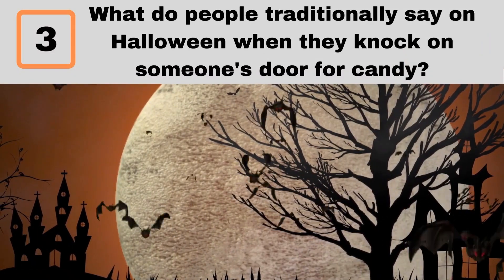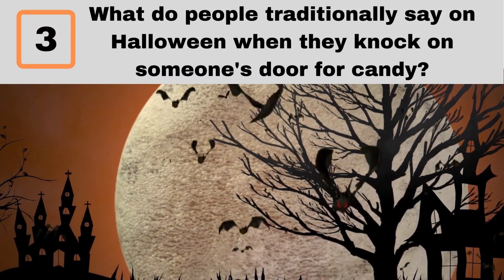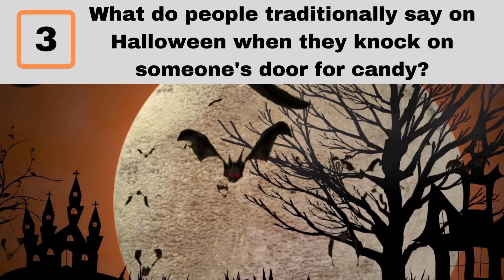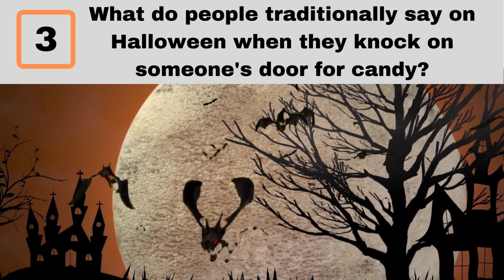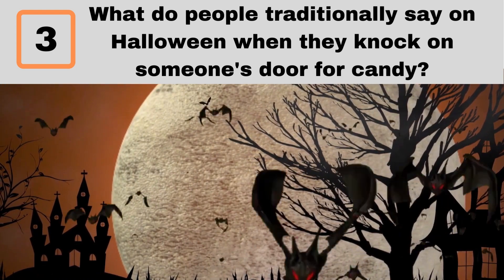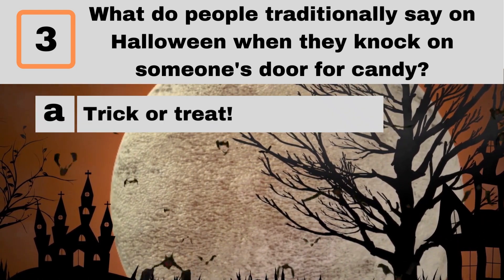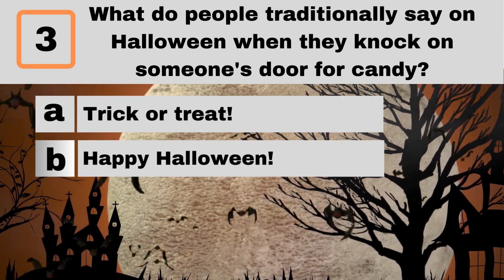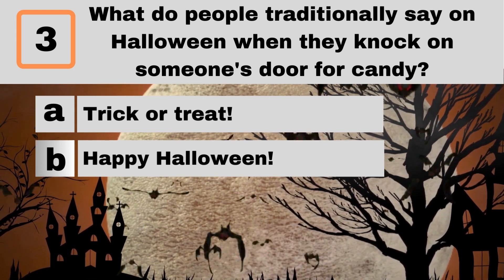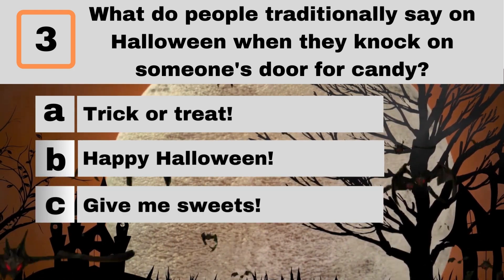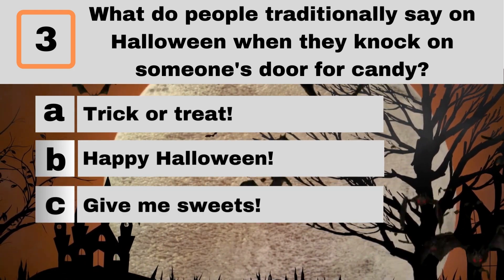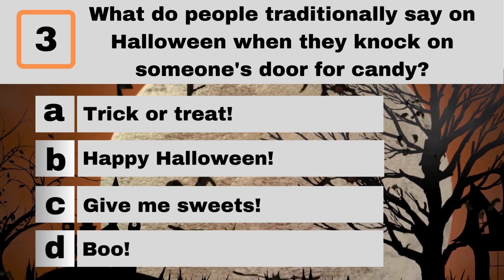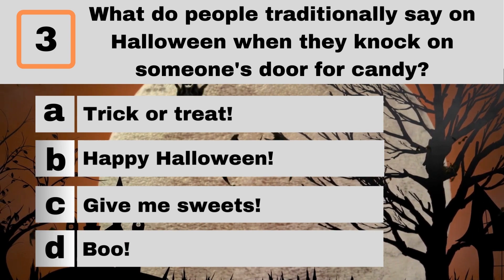Question 3. What do people traditionally say on Halloween when they knock on someone's door for candy? A. Trick or treat. B. Happy Halloween. C. Give me sweets. D. Boo.